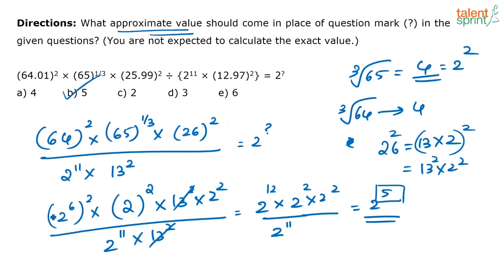The answer we are looking for is 5 — that is option B. Ideally when you solve this question you should be writing only the key step. All of these steps are just explanation. You should be able to do it in one step. The answer is 5.